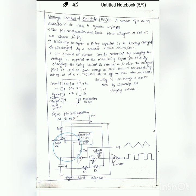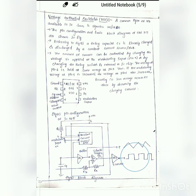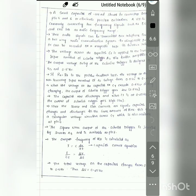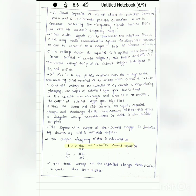By changing the modulating input signal voltage, or by changing the timing resistor RT value, or by changing the timing capacitor CT value, we can control the output frequency of this waveform. Now let us derive the output frequency equation.